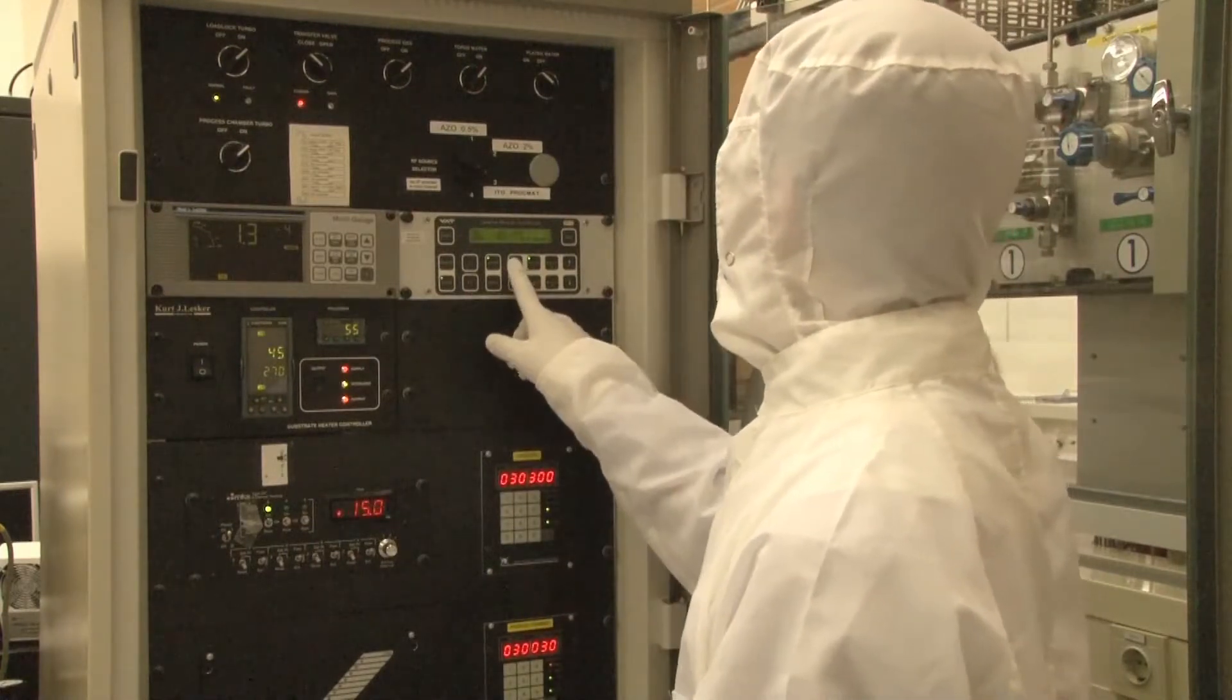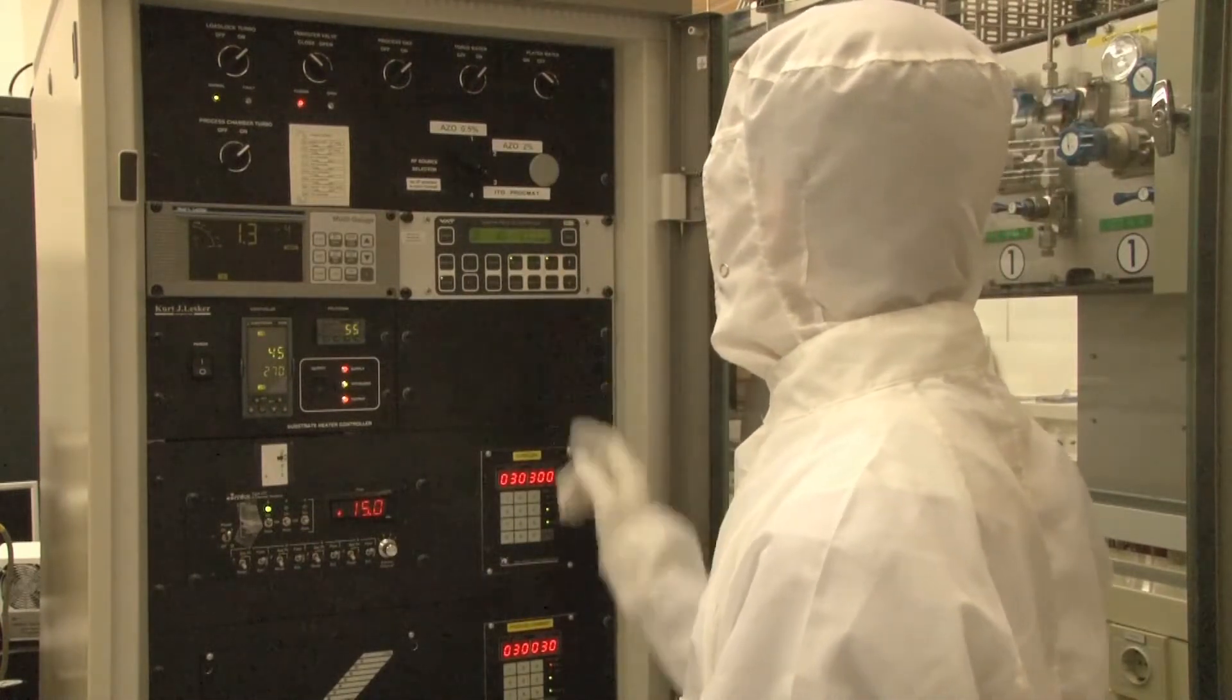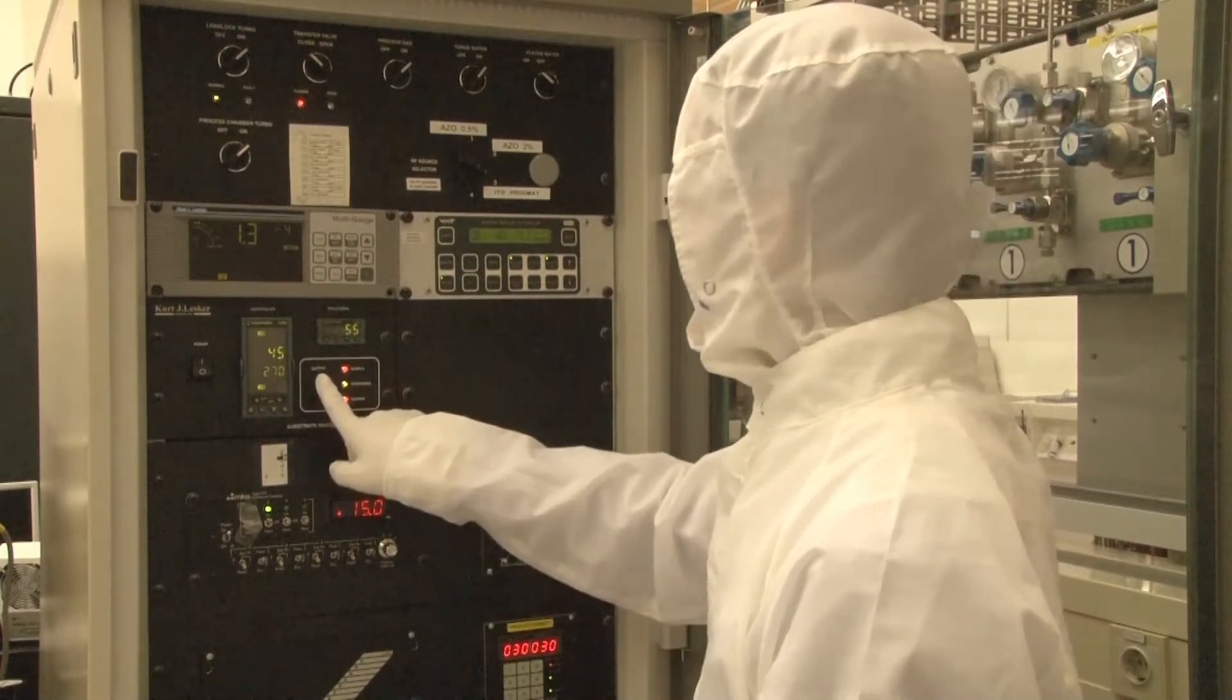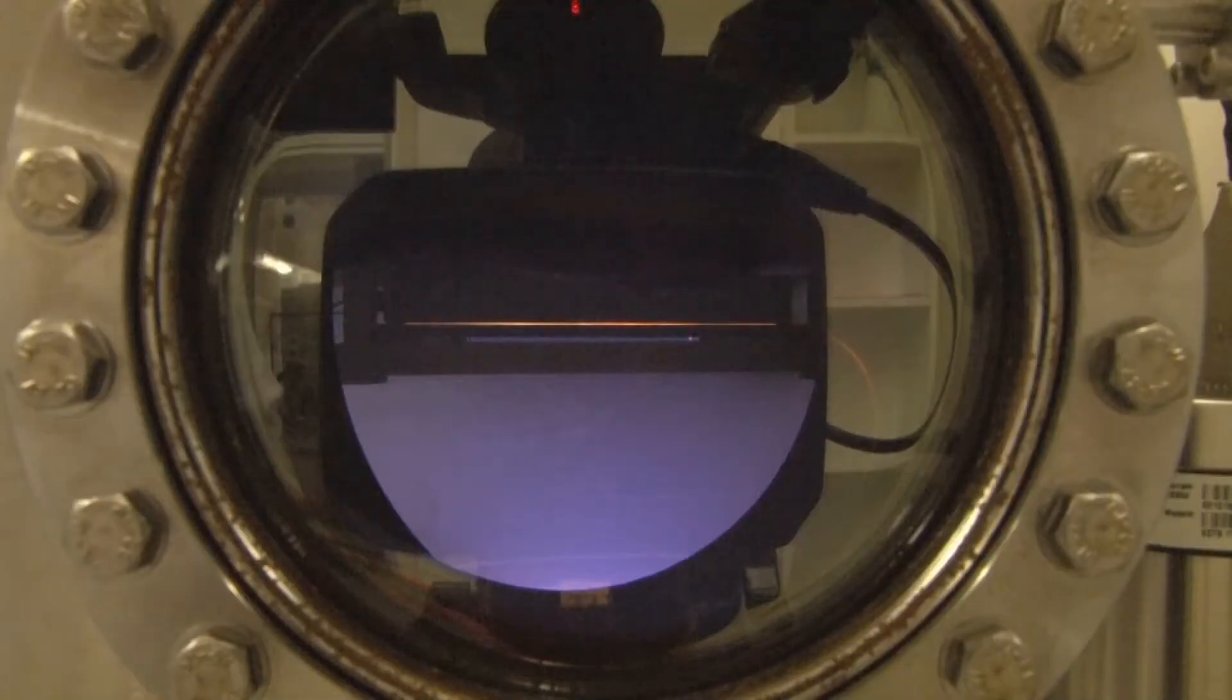During sputtering, the zinc oxide target is bombarded using an ionized noble gas like argon. The generated aluminum zinc oxide species are sputtered into the chamber and deposited onto the substrate. Here you see the sputtering plasma.